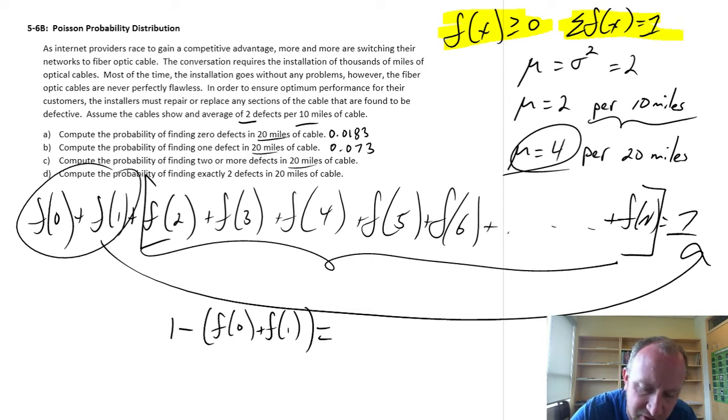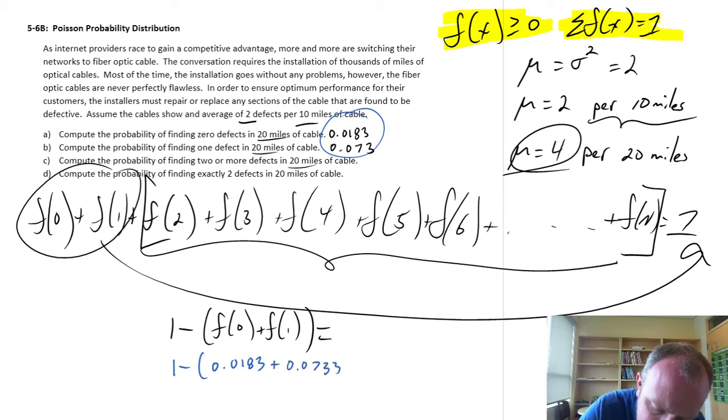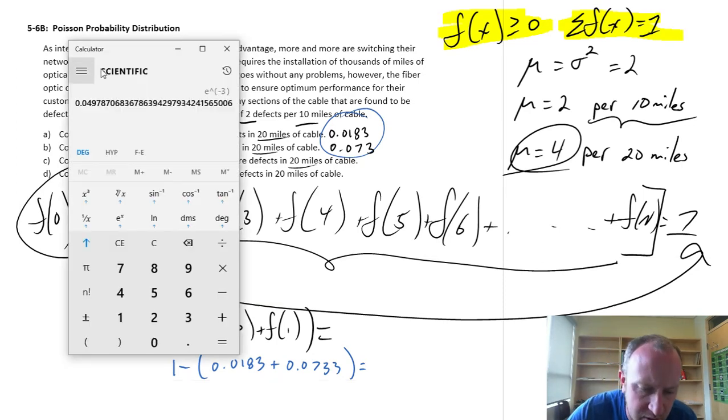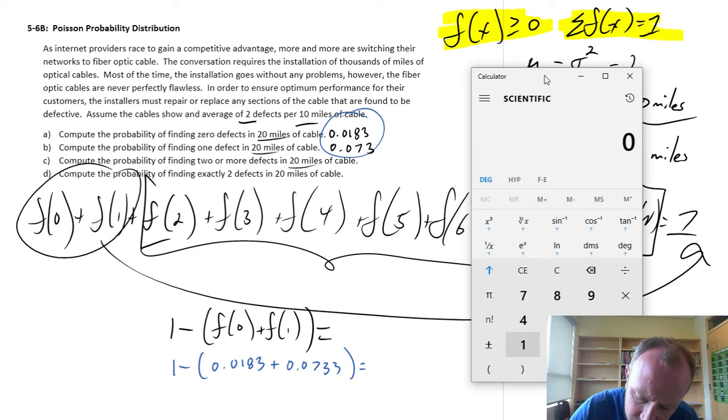Now we've already solved for those, we've got those numbers already as our answers to part a and b, so I can just substitute those in. This will be 1 minus 0.0183 plus 0.0733. And let's get that calculator. 1 minus 0.0183 minus 0.0733. So 0.9084.